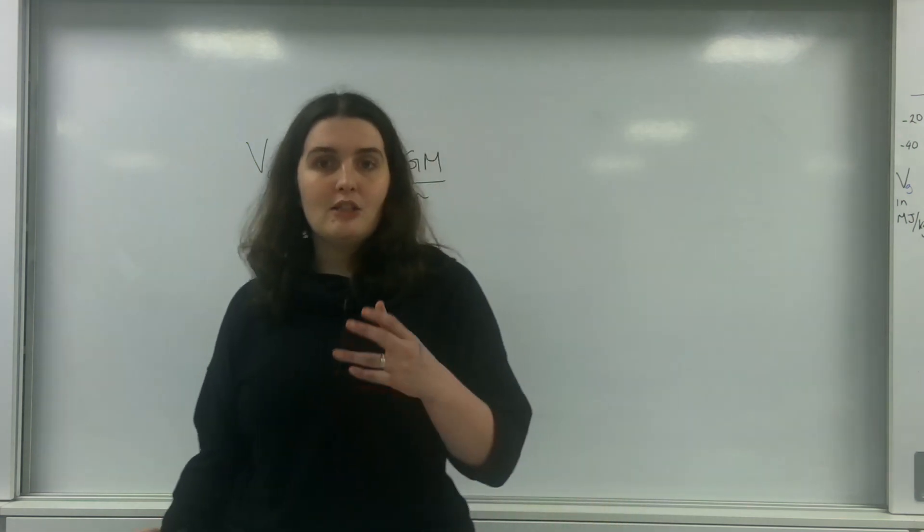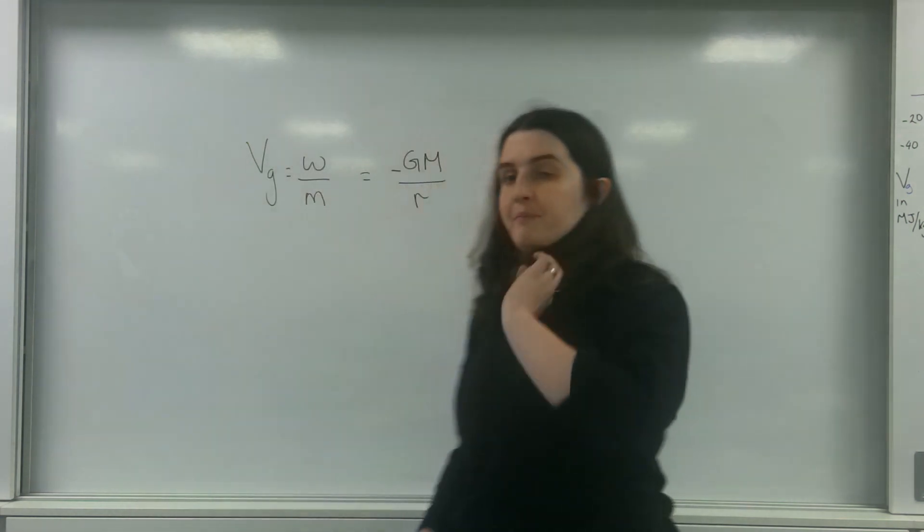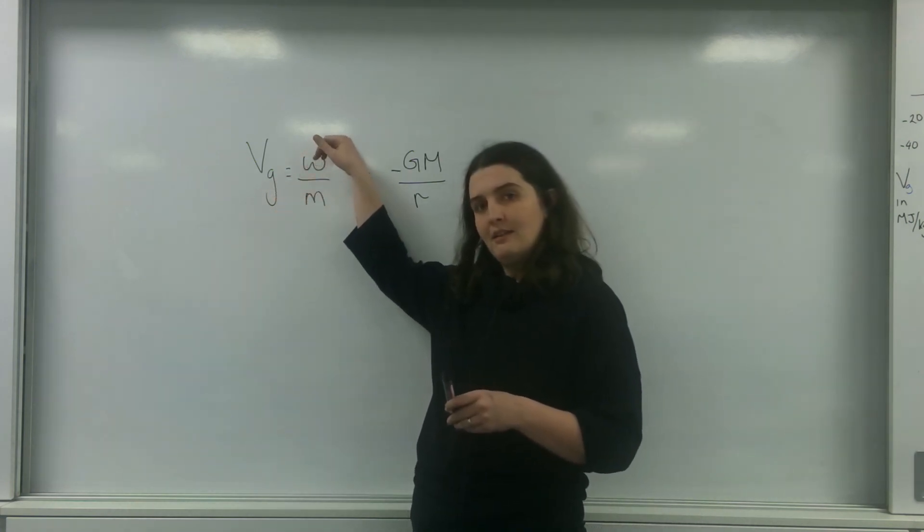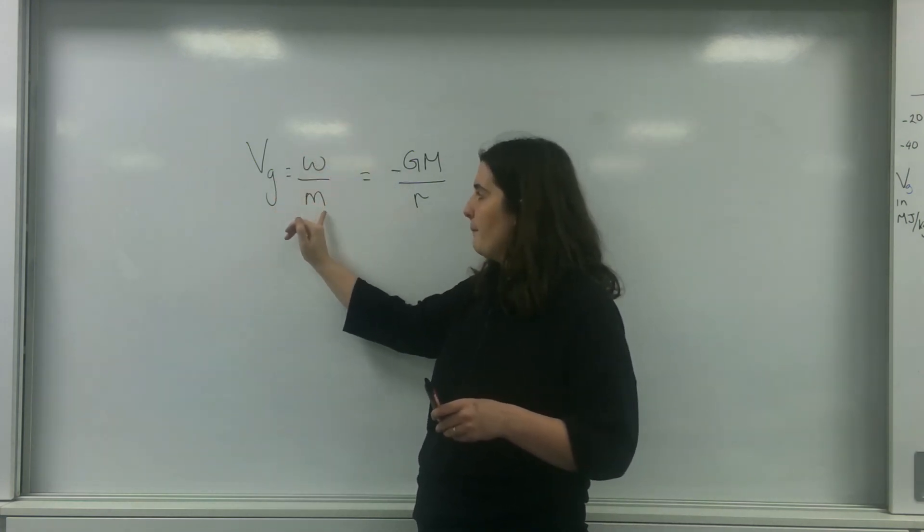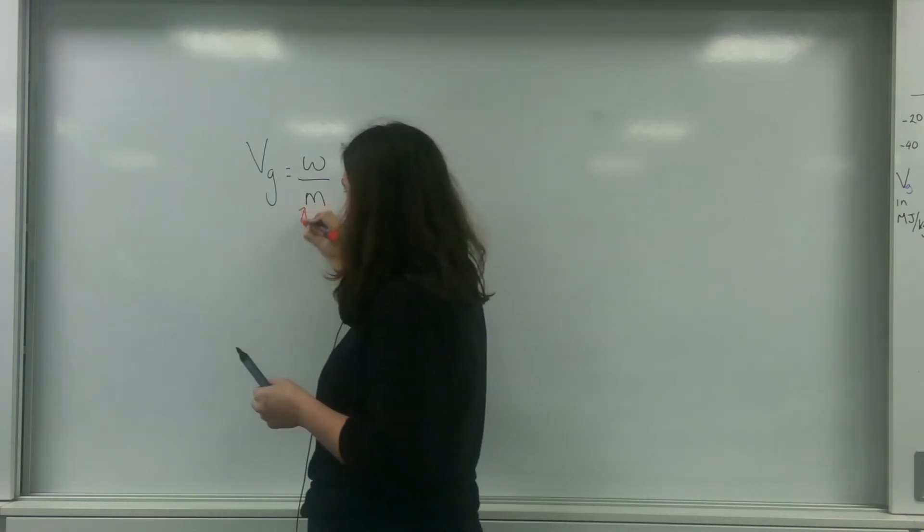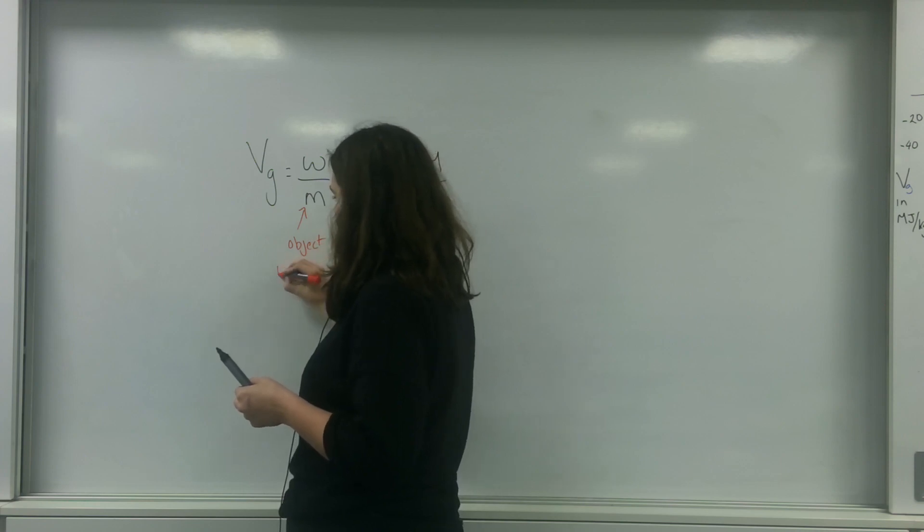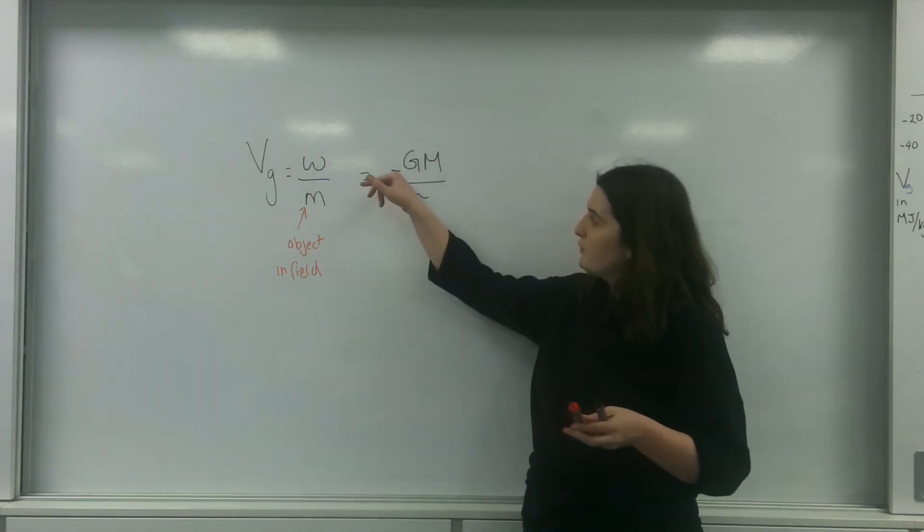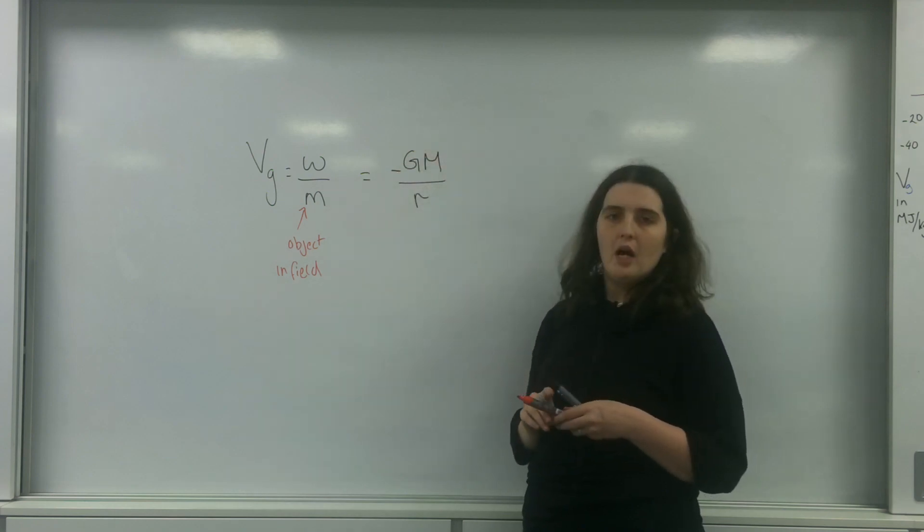So what I'm going to be doing is looking at this potential formula. Potential is the energy divided by the mass of the object that's affected by the field. So this is the object in field. And we've done this before, we've derived this formula that minus GM over r.